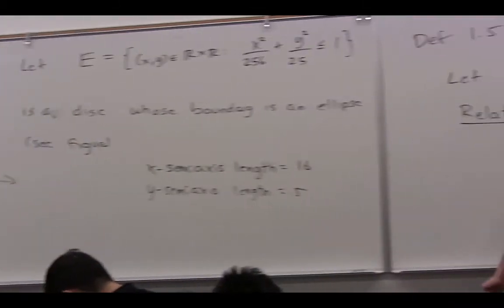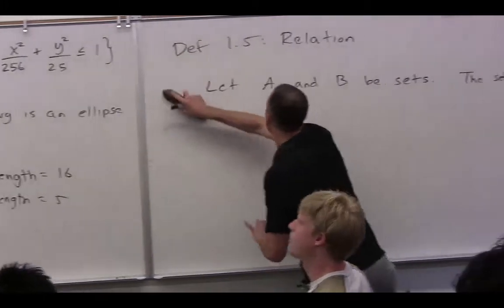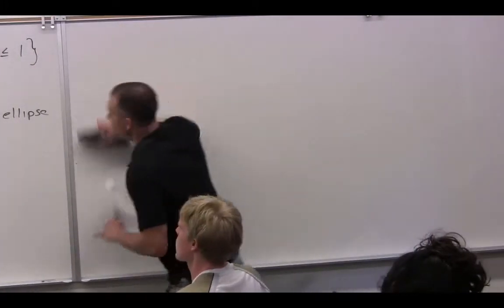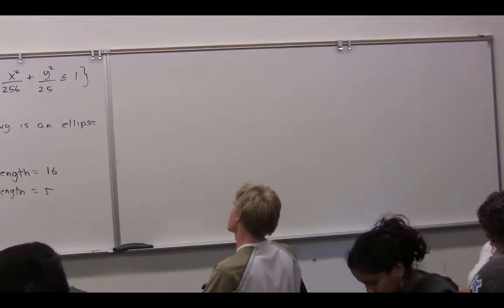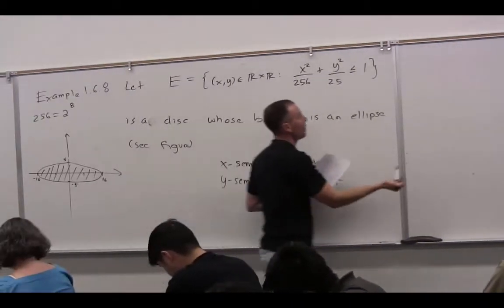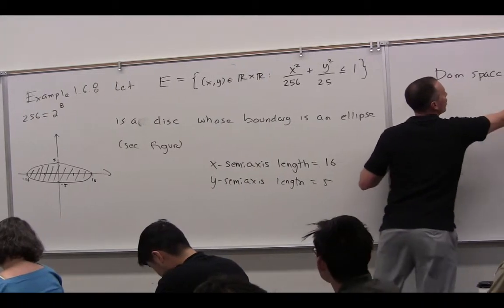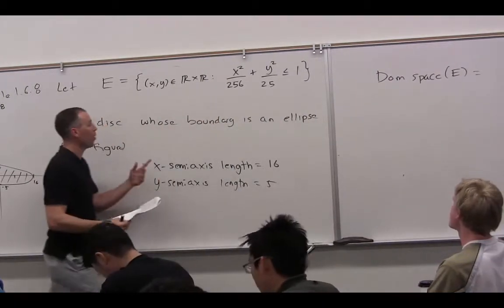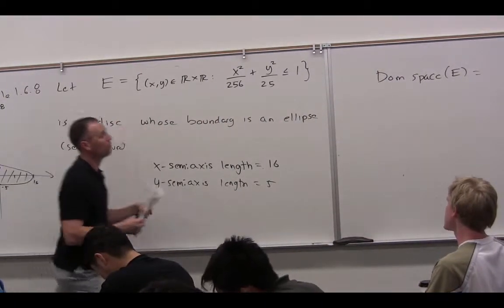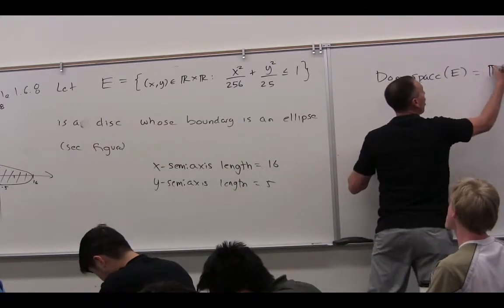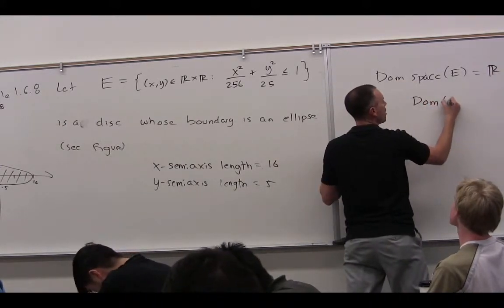Let's go ahead and analyze this relation. The moment I wrote this, what did I say about the domain space? What's the domain space of E? The ordered pair is x comma y. Where does x come from? R. So the domain space is R.